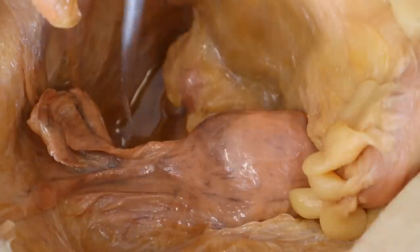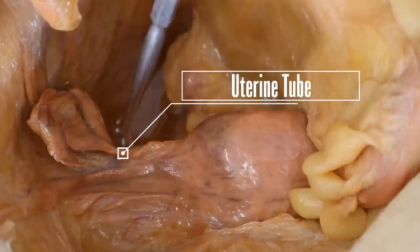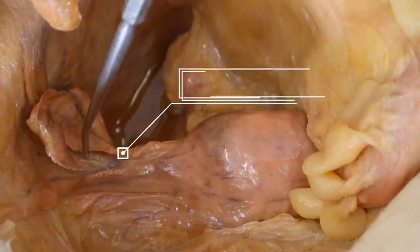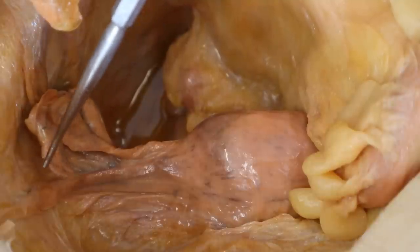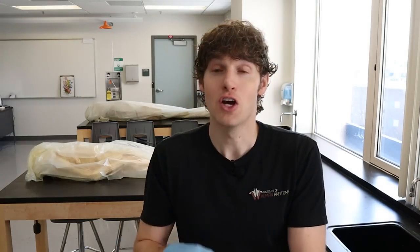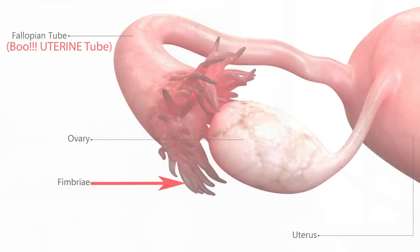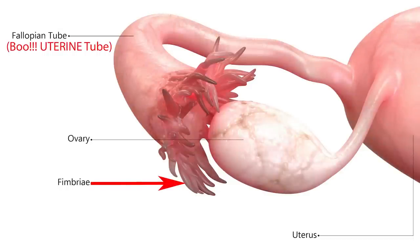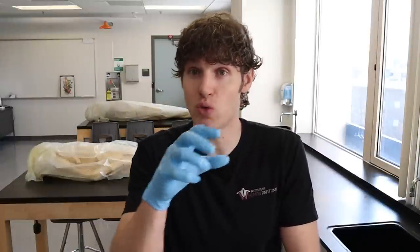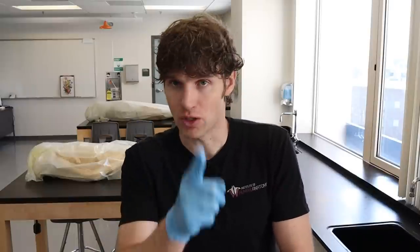The uterine tube, if you guys can see, is embedded in the tissue, so you have to look closely at the tip of the probe. Here is the uterine tube, and the very edge kind of resembles these little flower petals. The very edge of the uterine tube has these finger-like projections called fimbriae, which are really important because when the egg ruptures out of the ovary, these projections sweep and pull the egg into the uterine tube.